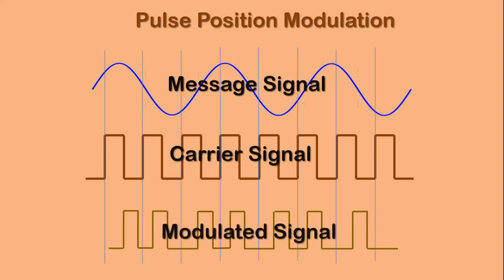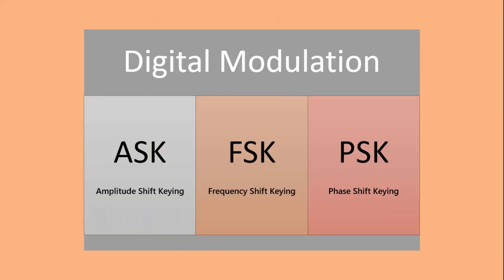As the amplitude of the modulating signal increases, the modulated pulse will move from the reference position. Considering digital modulation, it broadly has three parts: ASK (amplitude shift keying), FSK (frequency shift keying), and PSK (phase shift keying). There is also QPSK, quadrature phase shift keying. In all these digital modulation techniques the message signal is in digital form.